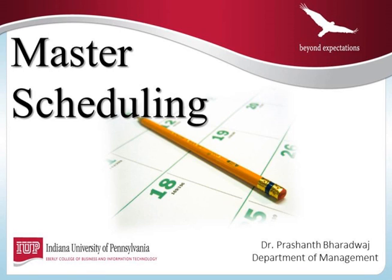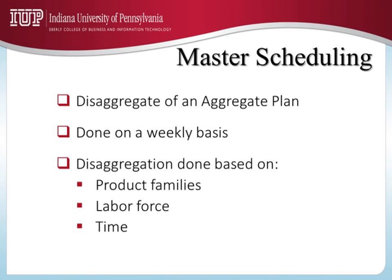Hi, this is Prashant Bharadwaj. In this module, we will talk about Master Scheduling, which is the second level in the hierarchy of operating decisions. The first level, as we have discussed in the past, is Aggregate Plan. The Aggregate Plan looks at an aggregate entity, and the Master Schedule looks at the disaggregate of an Aggregate Plan.